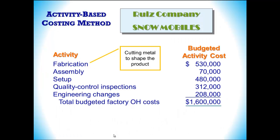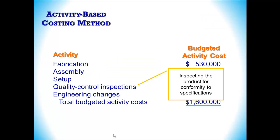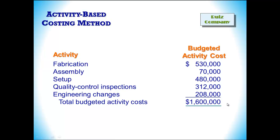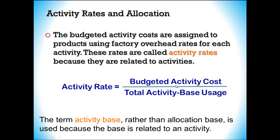Let's look at Ruez Company. They make snowmobiles and lawnmowers. The different activities involved include fabrication, assembly, setup, quality control inspections, and engineering changes. We still have a total of $1.6 million in overhead, but now we allocate it based on which product consumes more of each activity. We calculate an activity rate by dividing the budgeted activity cost by the total activity base usage.